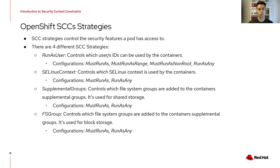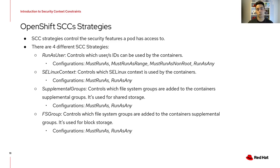Next is the SELinux context strategy, which controls which SELinux context is used by containers. As mentioned, our namespace gets assigned one default MCS setting, which is used in must run as mode. In run as any mode, you can change the SELinux MCS configuration for your pods. Then there are supplemental groups, which control which file system groups are added to the containers — mainly used for service threads — with two possible configurations: must run as or run as any. And finally FS group, which controls which file system groups are added to the container supplemental group, mainly used for block storage, also with must run as or run as any configurations.